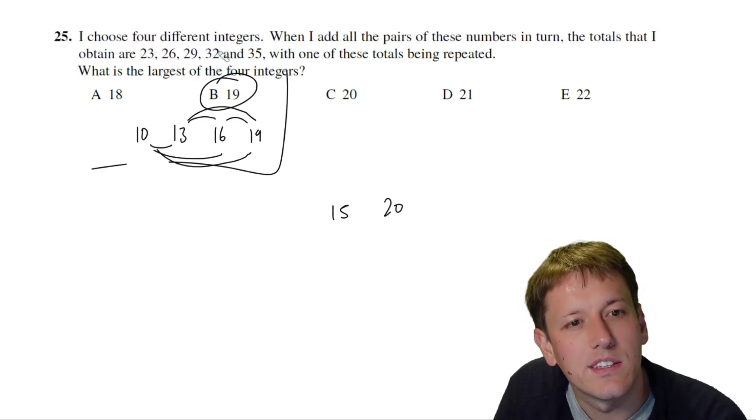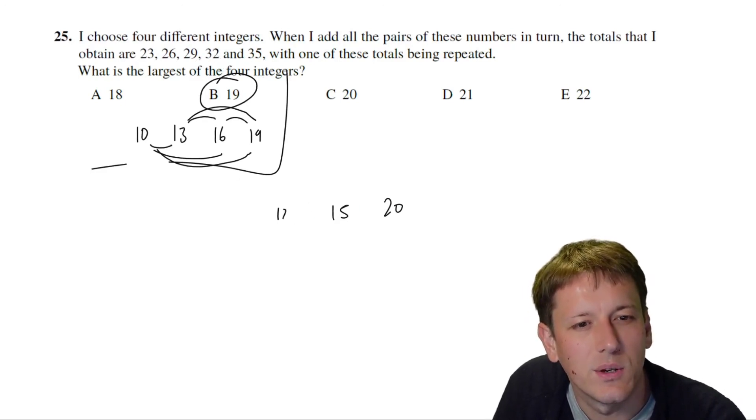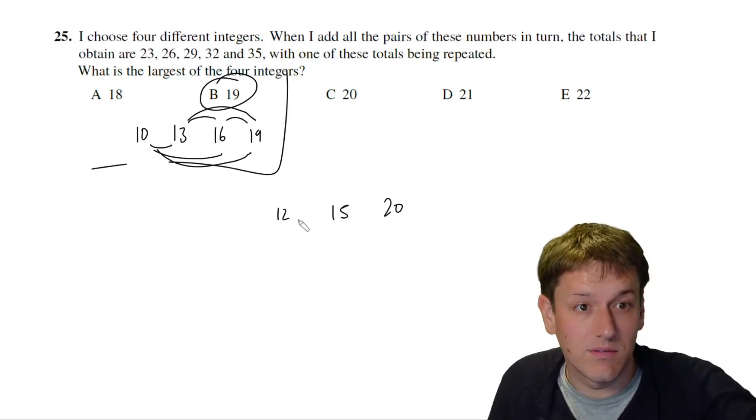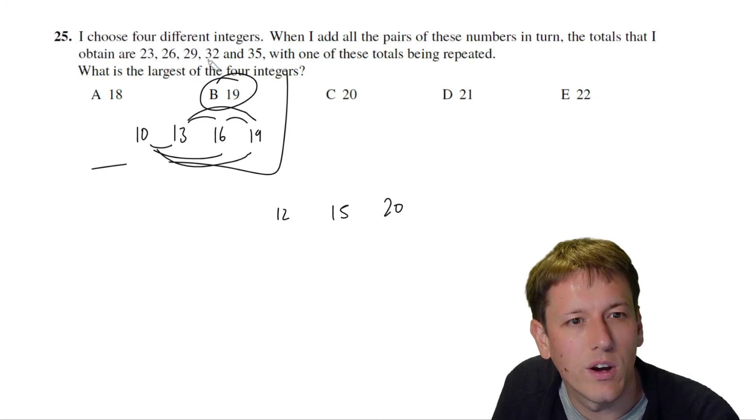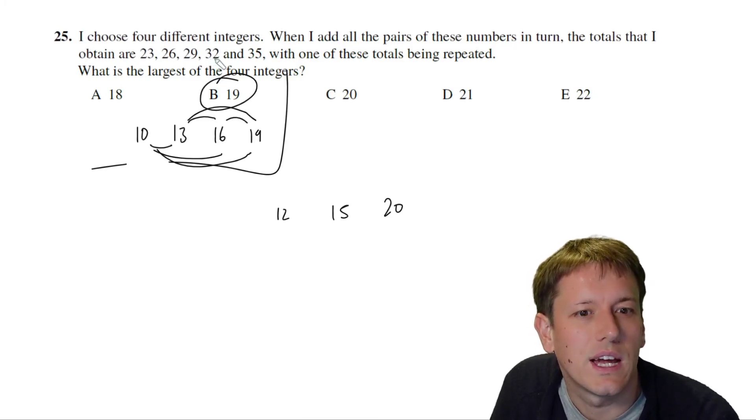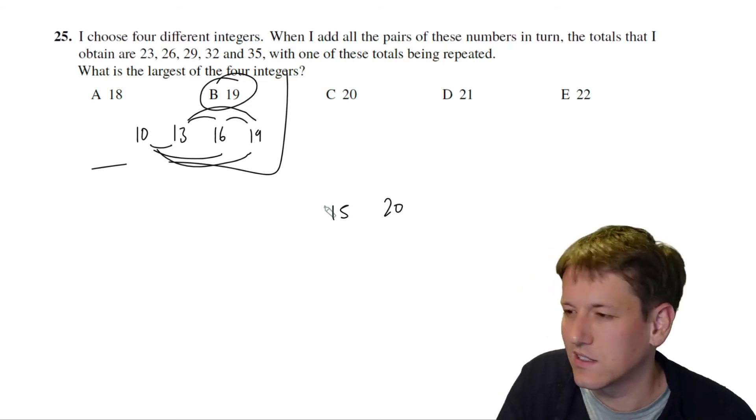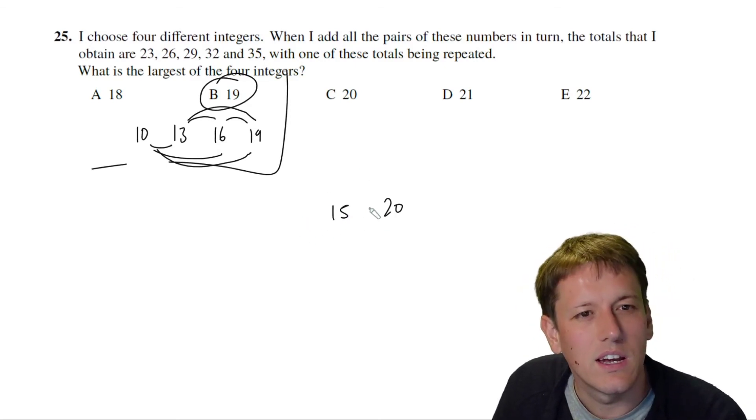But now to get the 32, I'm gonna have to include either a 12, which doesn't work because 12 plus 15 isn't one of the numbers, or I'm going to have to do 15 plus 17, and then I'd have 20 plus 17, and that's not in there, right?